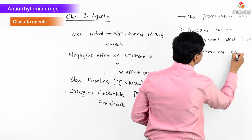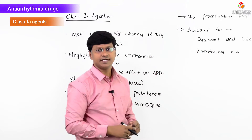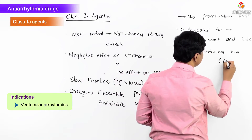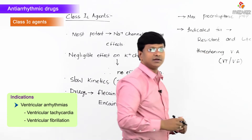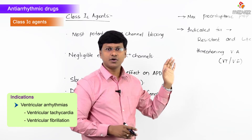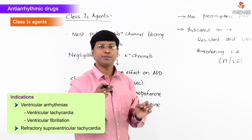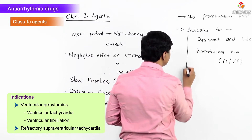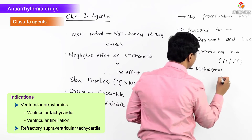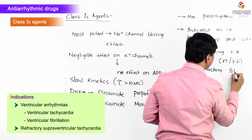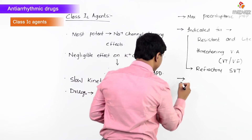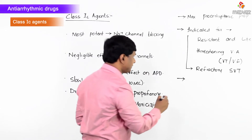They are indicated for resistant and life-threatening ventricular arrhythmias, including ventricular tachycardia or ventricular fibrillation. Not only for ventricular arrhythmias, these are also indicated for the treatment of refractory supraventricular tachycardia.